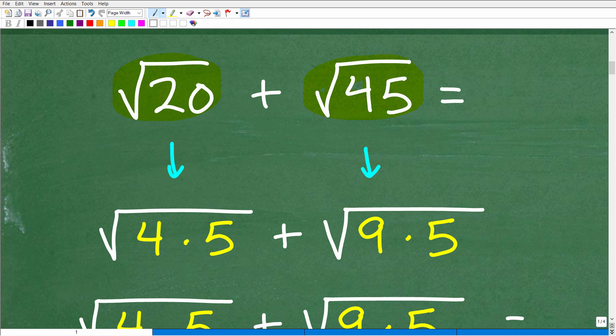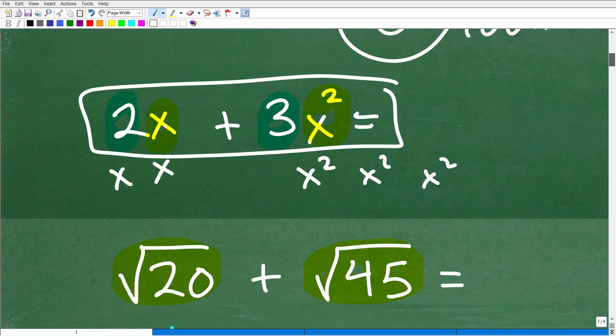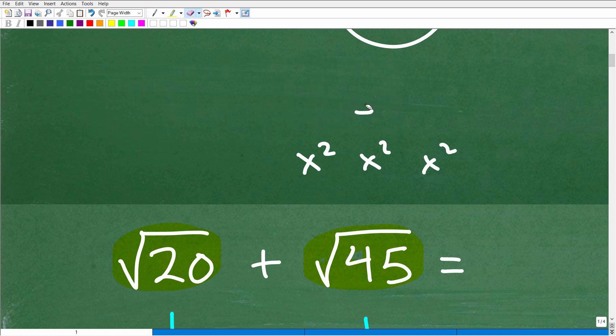OK, so what we want to do is look for perfect square factors. So in other words, the square root of 20 is the same thing as a square root of 4 times 5. Now, the square root of 20 is also the same thing as a square root of 2 times 10. But we're not so interested in factors like 2 and 10 or 1 and 20, things like that. We're looking for perfect squared factors.